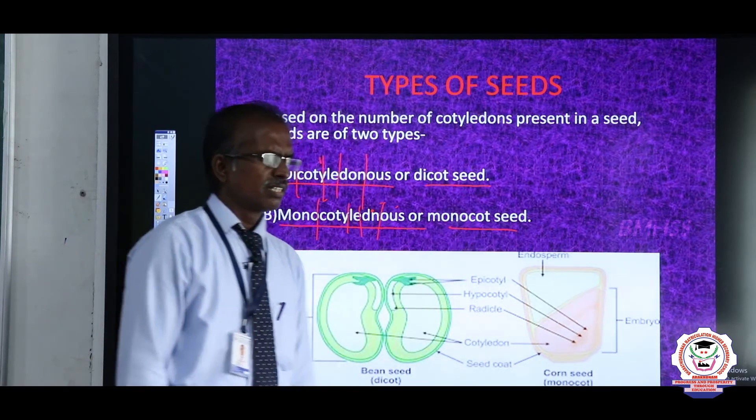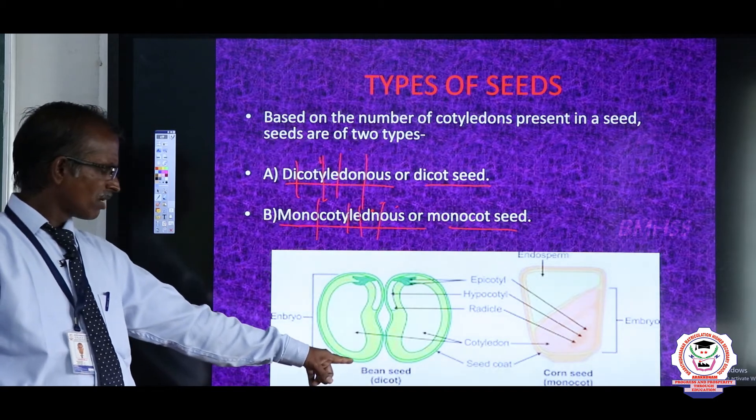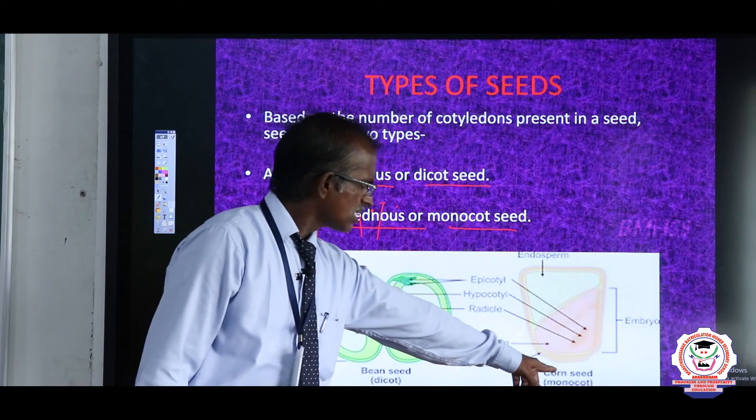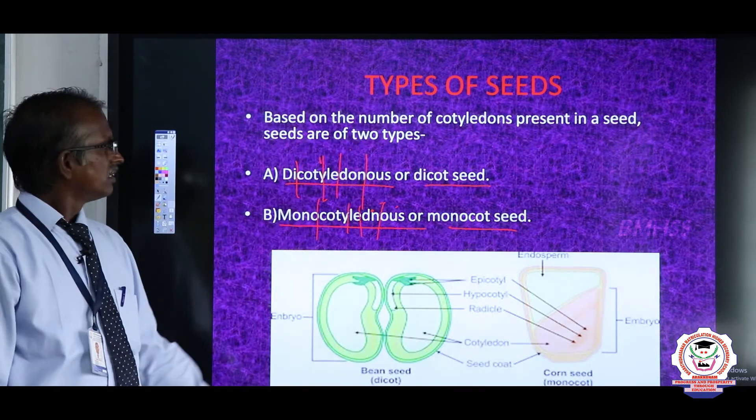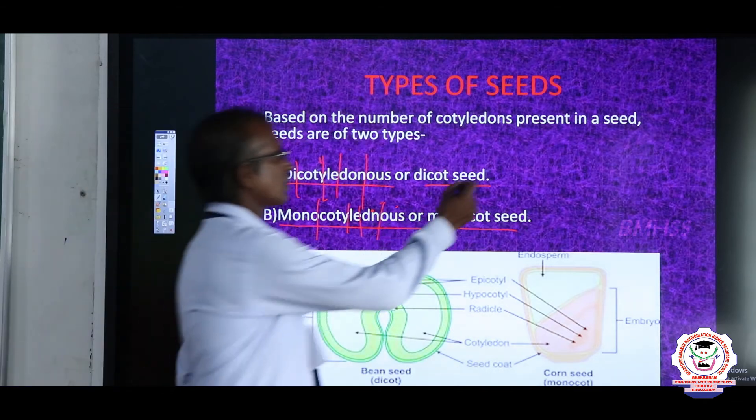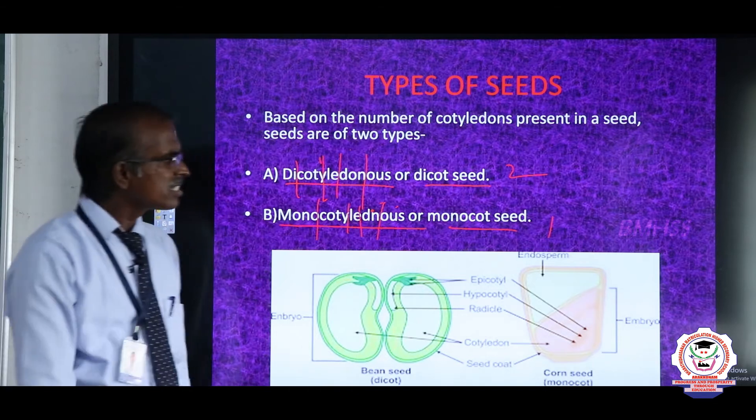Dicotyledonous seed: Bean is the example for dicot seed. Corn seed is the monocot seed. In dicot, two cotyledons are present. In monocot, only one cotyledon or scutellum is present.